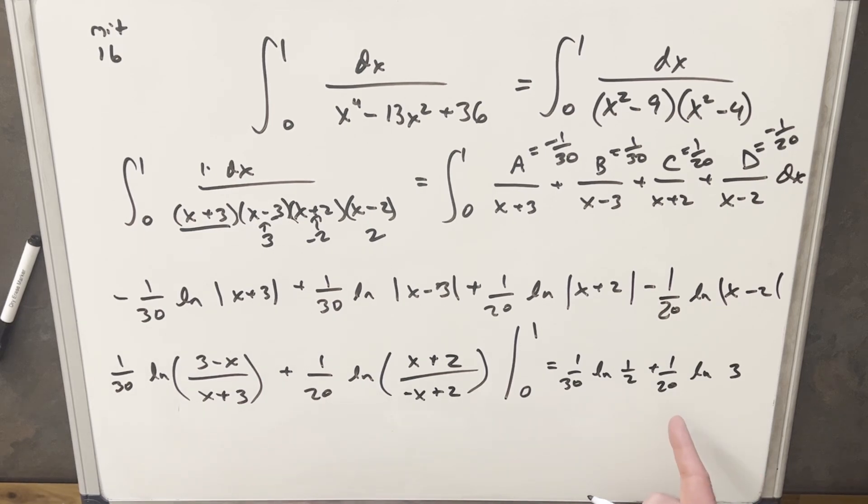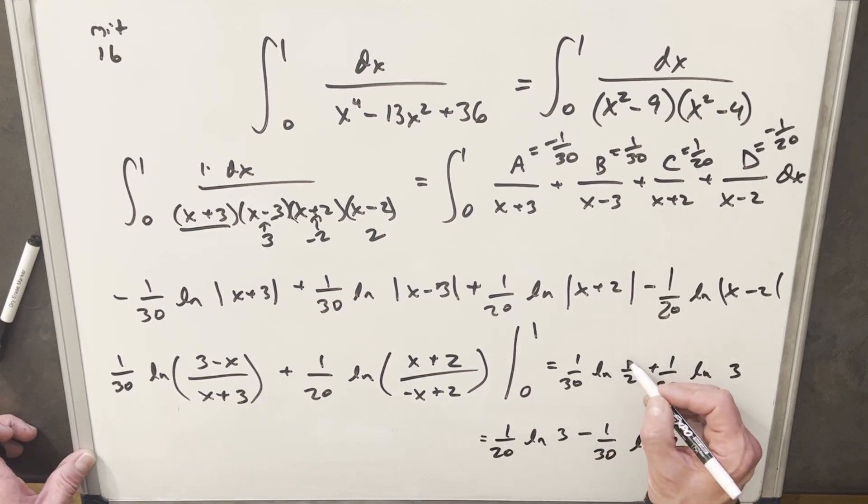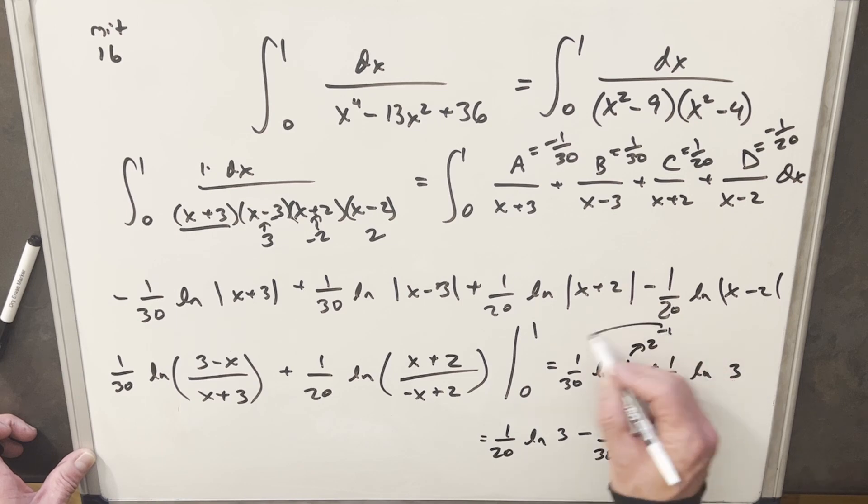So this is basically the final answer. This is fine. Actually, I think I'm gonna just rearrange it a little bit to how they have it in the answer key. So they wrote it as 1 over 20, natural log of 3, minus sign, 1 over 30, natural log of 2. Just noticing 1 half is the same thing as minus ln 2, so I just bring a minus, like this is like 2 to the negative 1, and we bring the negative 1 out front, and that's how we get that minus sign.